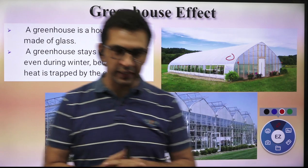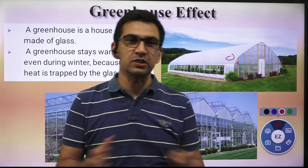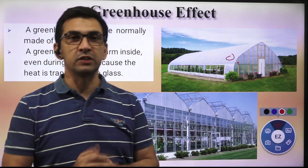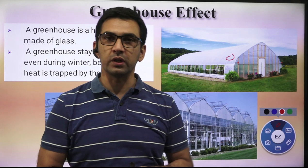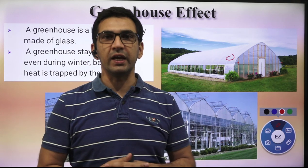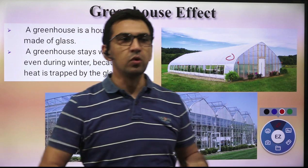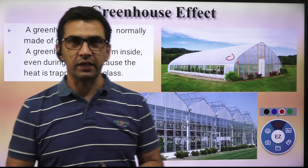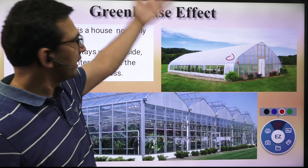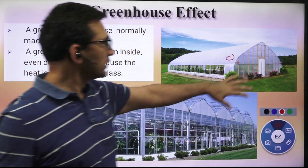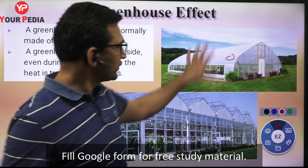Greenhouses are mostly found in hilly or mountainous areas where temperatures are quite low. The population of human beings and animals there is thin, but for that population to survive they are dependent on plantations. In order to grow plants and vegetables, they make use of these glass houses, because even in the daytime temperature can be in the negatives and ordinary plantations cannot survive.